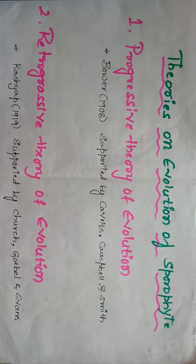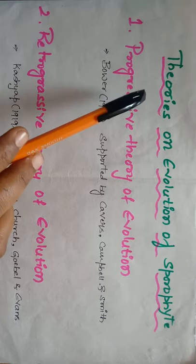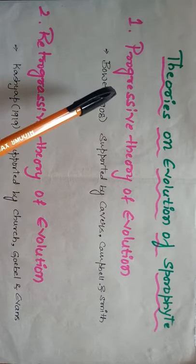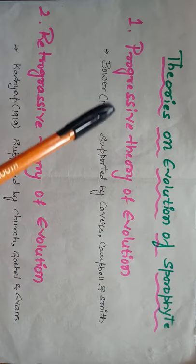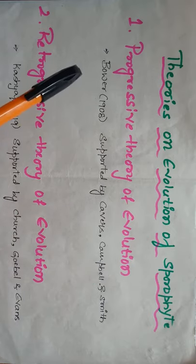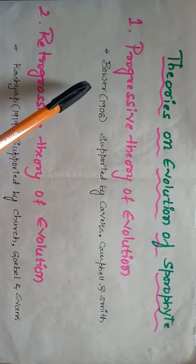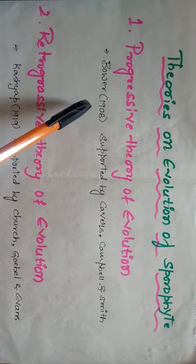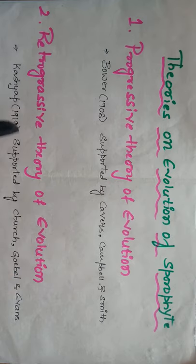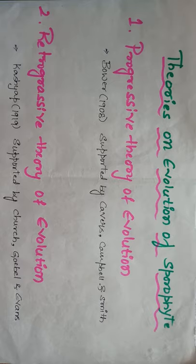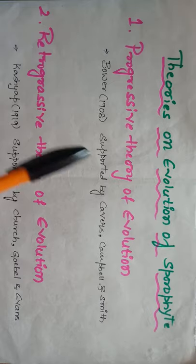The evolution of sporophytes in bryophytes can be studied by the following theories. The first one is the progressive theory of evolution and the second one is the retrogressive theory of evolution. The progressive theory was first described by Bower in 1908, supported by Cavers, Campbell, and Smith. The retrogressive theory was first put forward by Kashyap in 1919, supported by Church, Gobel, and Evans.